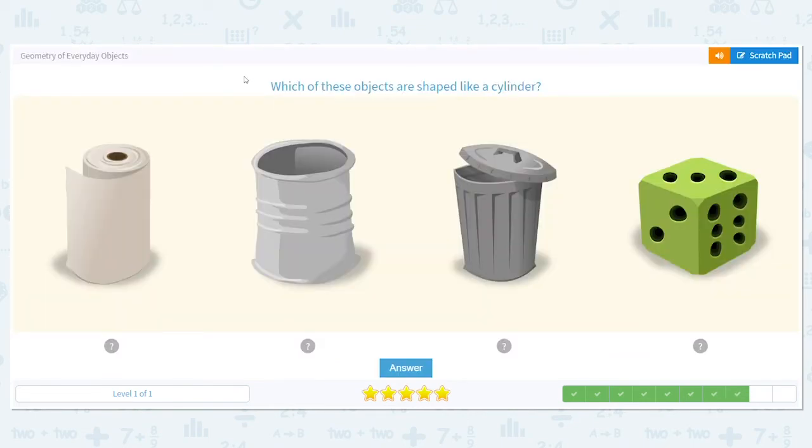Which one of these is shaped like a cylinder? Remember a cylinder? If I put it on its side, it could roll. And the top and the bottom are circles or ovals. I see several here. What do you think they are? Could the paper towel roll work? Yeah. If I put it on its side, I could roll it. And I see a circle on the top, which means there's a circle on the bottom.